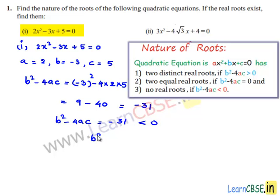Since the discriminant b² - 4ac is less than 0, the given equation has no real roots.